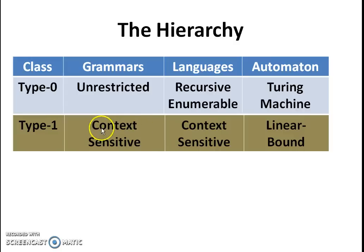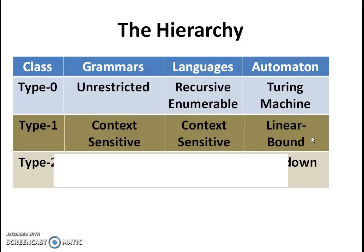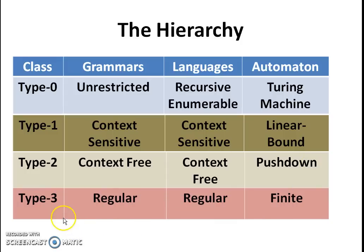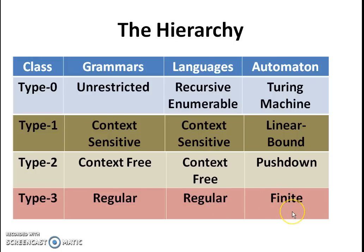Type 1 grammar is context-sensitive grammar; the language generated is context-sensitive language, and the automata associated with it is linear-bounded automata. Type 2 grammar is context-free grammar; the language generated is context-free language, and the machine associated is push-down automata. Type 3 grammar is also known as regular grammar; the language generated is regular language, and the machine associated is finite automata — that is, NFA and DFA.